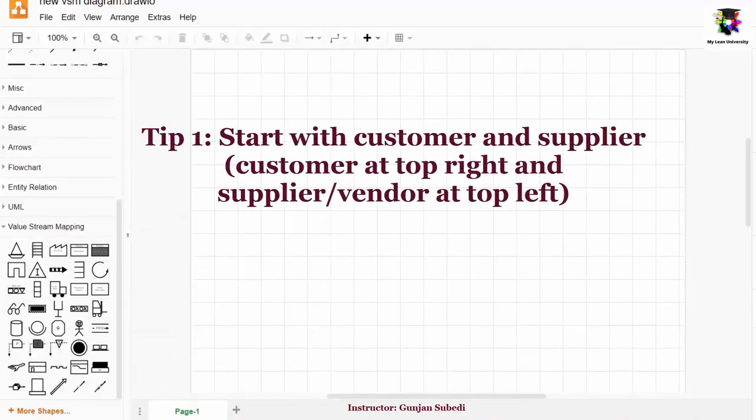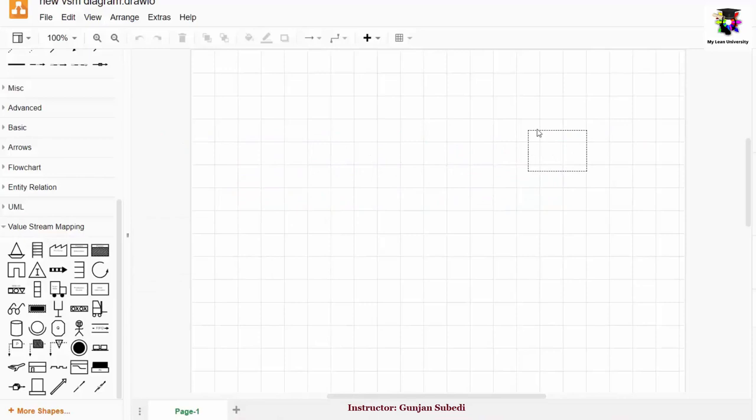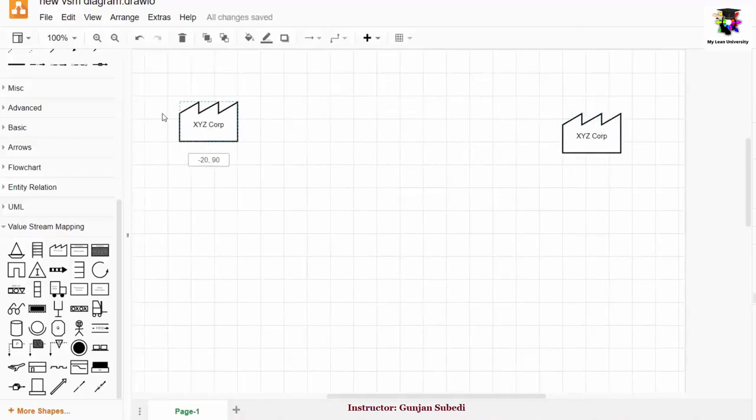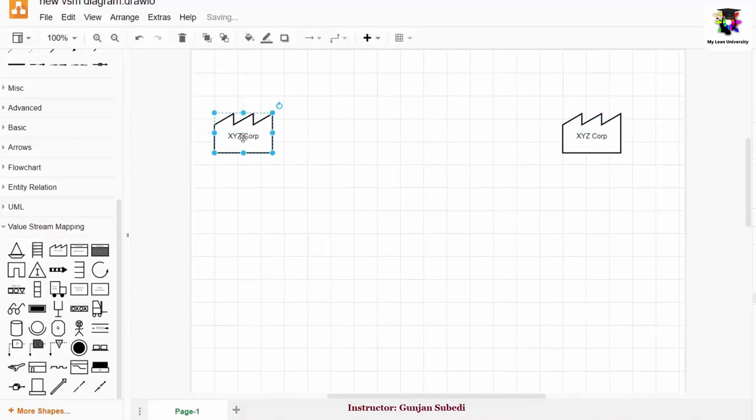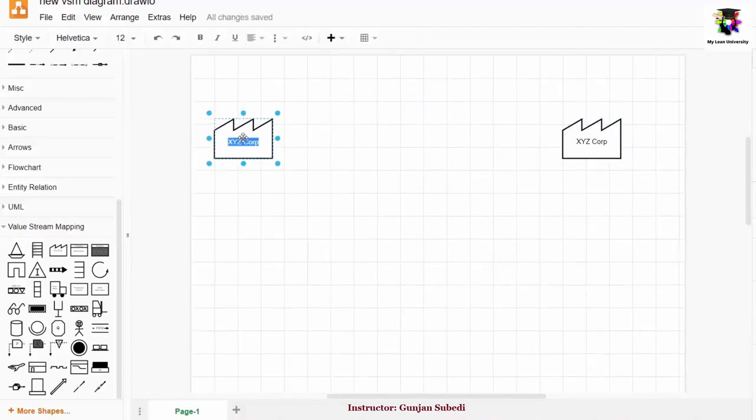So the first tip that I want to provide you for drawing the value stream map easily is to start with the customer or supplier and the vendors. So you just have to drag. The customer is always at the top right as you already know. And you can copy it and make another symbol which is for the supplier.